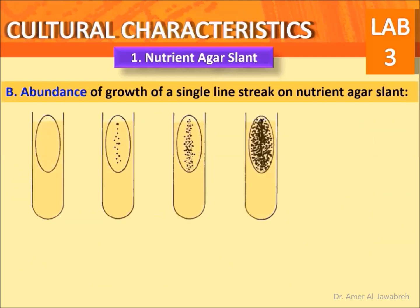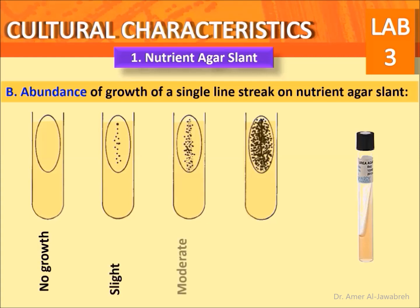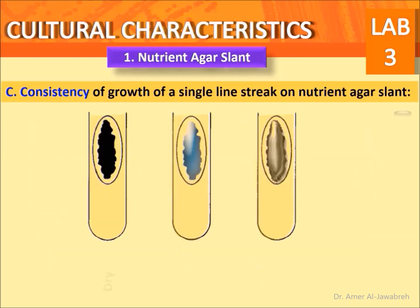The abundance of growth of a single line streak on a nutrient agar slant is classified as: no growth, slight, moderate, or large.